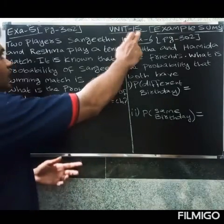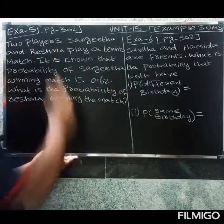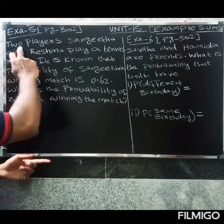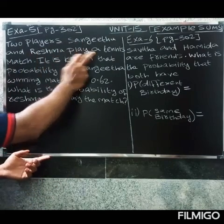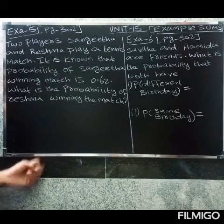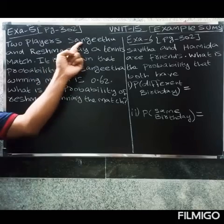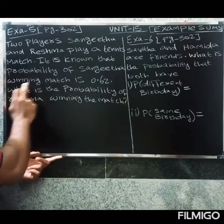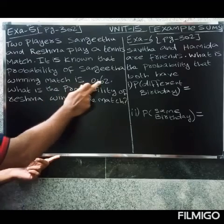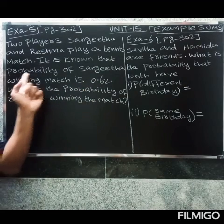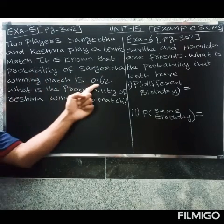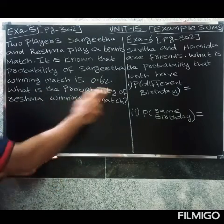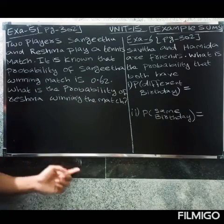Welcome friends, in unit 15, example 5, page number 302. Two players, Sangeetha and Reshma, play a tennis match. It is known that the probability of Sangeetha winning the match is 0.62. What is the probability of Reshma winning the match?